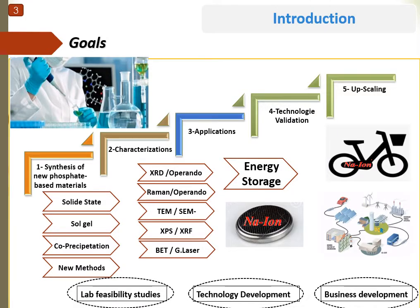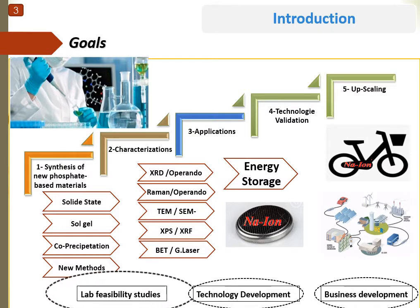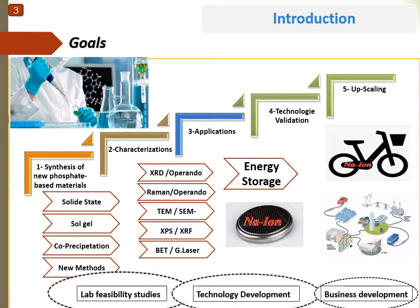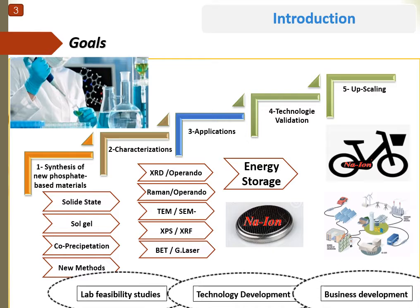The main objective of this work can be divided into two parts. The first part consists of synthesizing new phosphate-based materials with abundant elements. The second part, which is called technology development, consists in the characterization of the cathode materials using different techniques. The challenge is to validate the results in order to be able to move to the third part, which is scaling up.